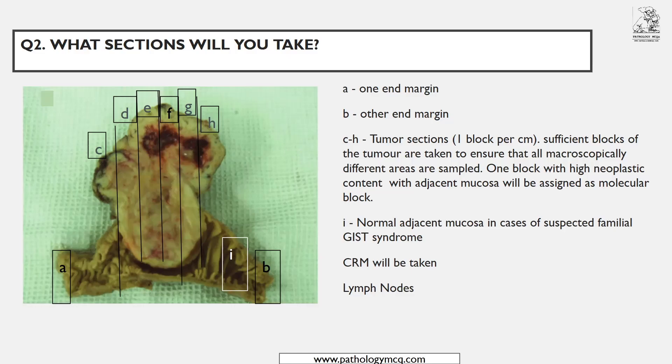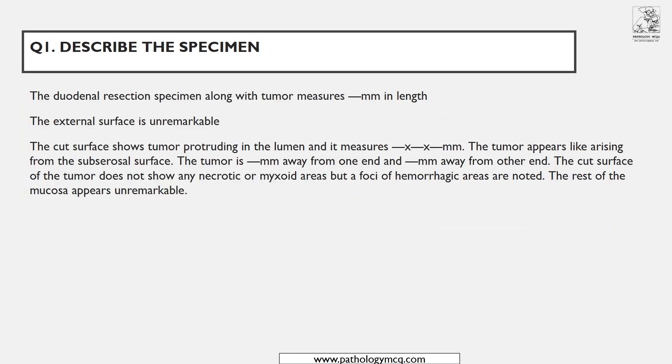A block with high neoplastic content with adjacent mucosa will be assigned for the molecular block. Also take adjacent mucosa to look for any abnormal pathologies — in familial GIST you may have precursor lesions. If CRM is present, ink and take that block as well. Mention lymph nodes even if they are not visible in the picture.